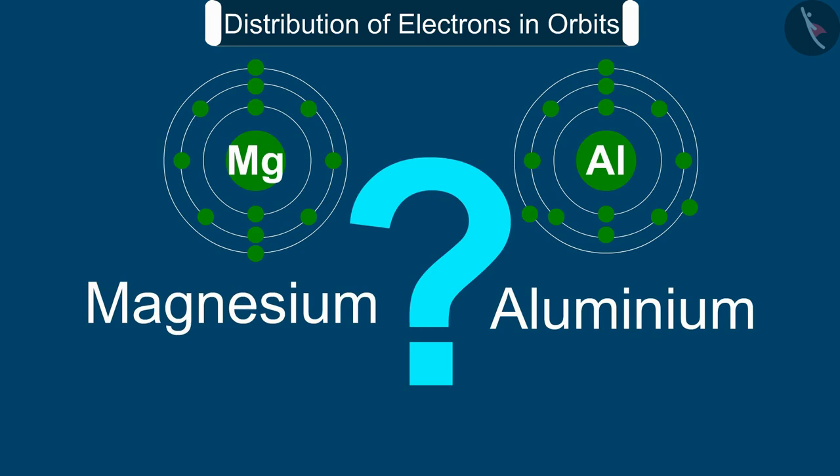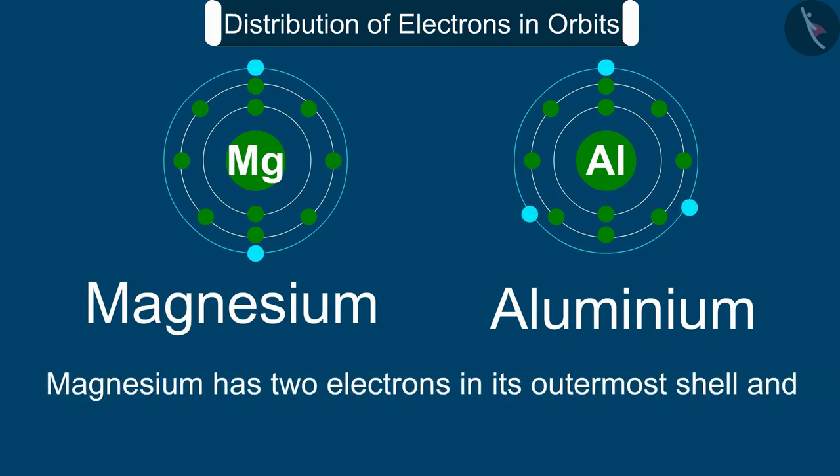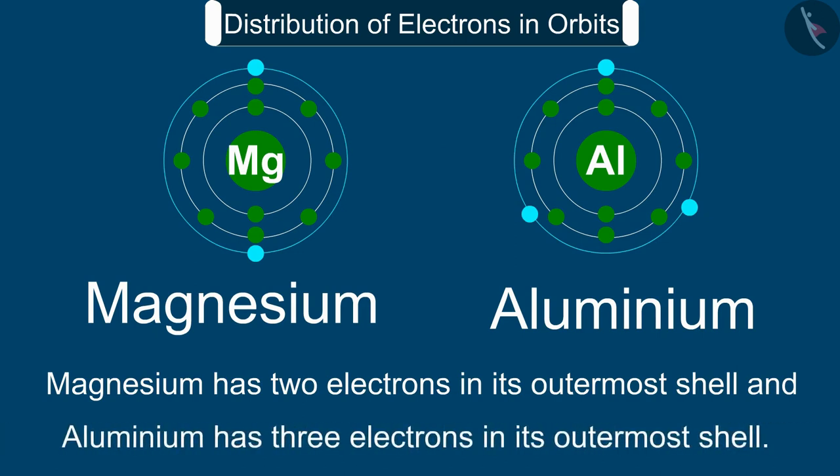Can you tell what is the valency of magnesium and aluminium? Absolutely correct, it is two and three respectively, because magnesium has two electrons in its outermost shell and aluminium has three electrons in its outermost shell.